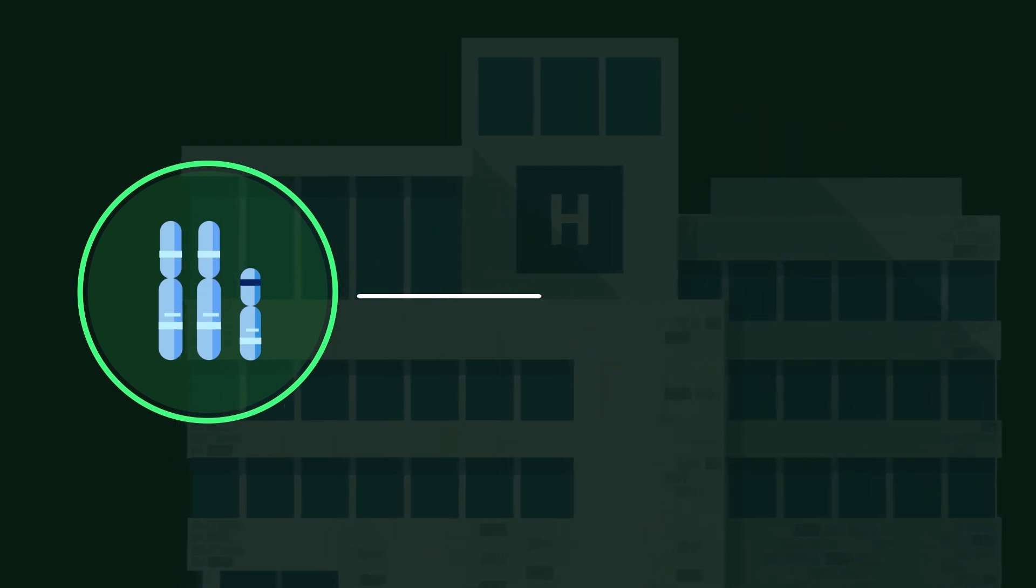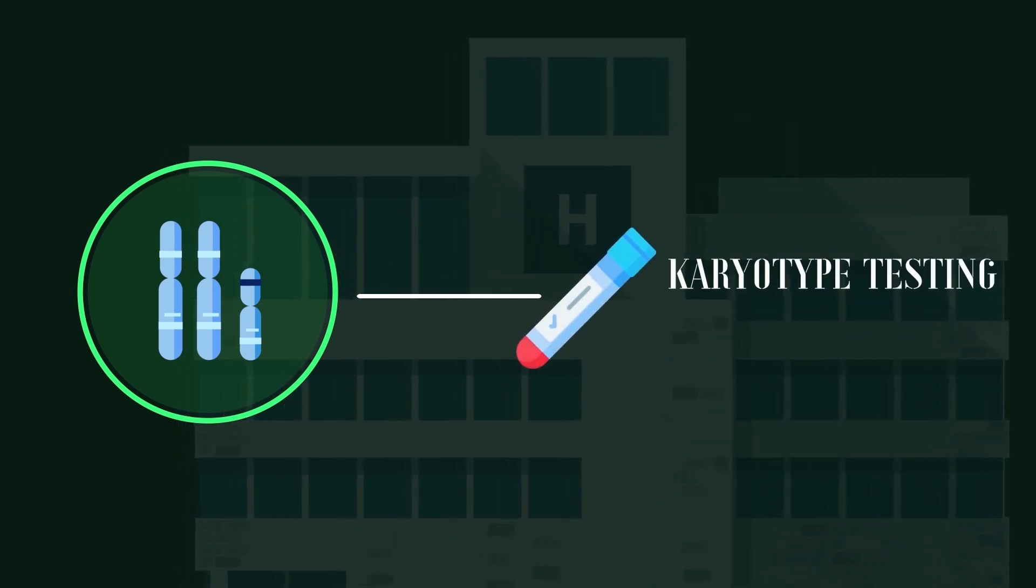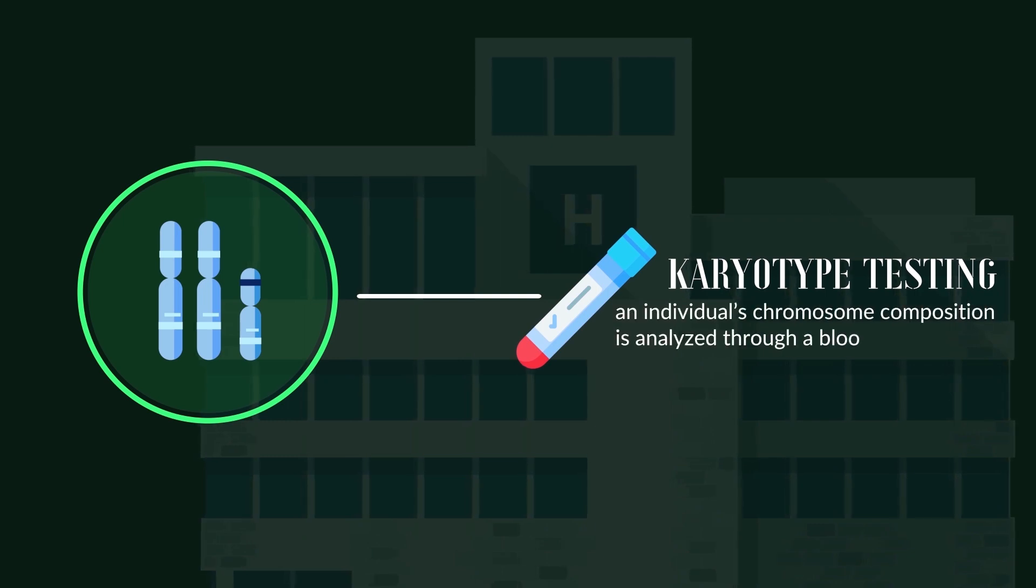The diagnosis for Klinefelter syndrome uses karyotype testing, where an individual's chromosome composition is analyzed through a blood sample.